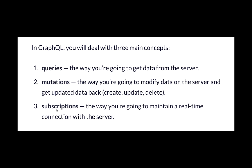We also have a very important feature called subscriptions. Let's say you want to maintain a real-time connection with the server or get real-time events. For example, a live football match is going on and you want to get real-time events from the live server — whenever any object field gets updated, you want that data in your app automatically. In that case, you can write subscriptions in your GraphQL to get live event data. We will see the syntax for queries, mutations, and subscriptions in upcoming chapters.